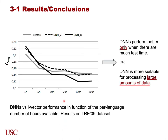But DNNs also had some drawbacks. From this line chart, we can see that as the test time increased, DNNs performed better. But at the beginning, DNNs were worse than the iVector-based systems. So we conclude that DNNs perform better only when there is much more test data — or we can say, DNNs are more suitable for processing large amounts of data.